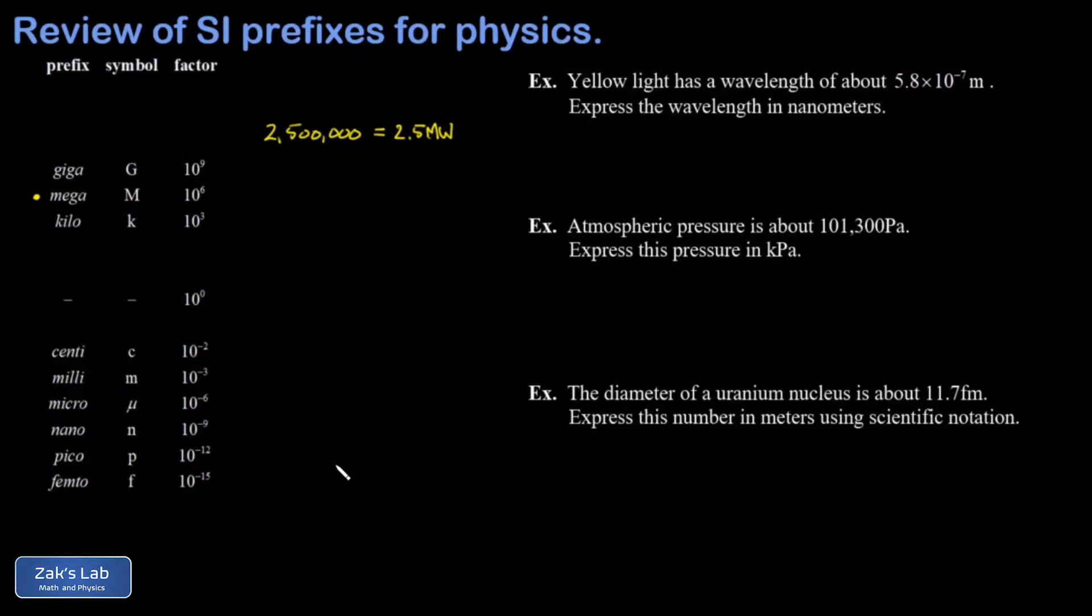Let's work a few examples to get how the prefixes work. In the first example, we're told that yellow light has a wavelength of about 5.8 times 10 to the negative 7 meters. So that's scientific notation there. And then we want to express the wavelength in nanometers. If I look at my chart, nano means 10 to the negative 9. And so that's what we try to get out of this scientific notation.